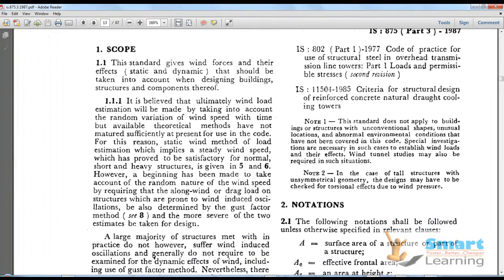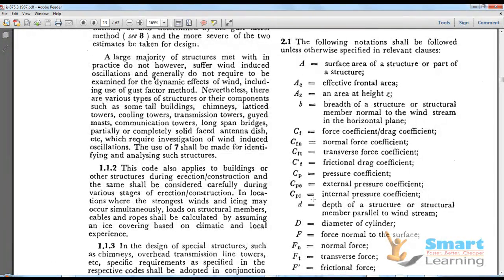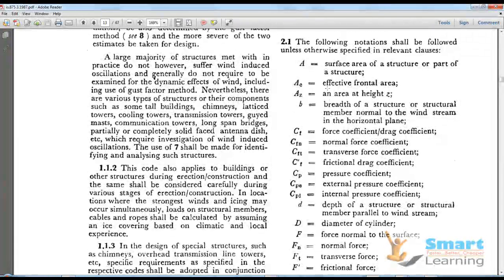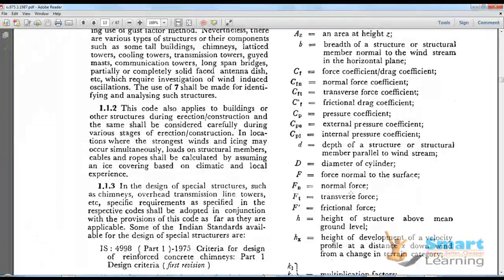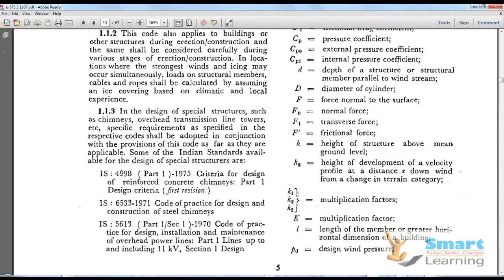The scope: this standard gives wind forces and their effects, static and dynamic, that should be taken into account when designing buildings, structures or any type of combination. The wind load estimation will be made by taking into account the random variation of wind speed with time. The key notations include surface area of a structure, effective frontal area, breadth of structure, force coefficient or drag coefficient, frictional force, pressure coefficient, and height of structure above mean ground level.